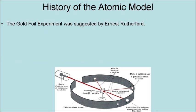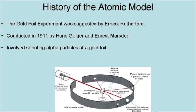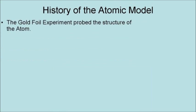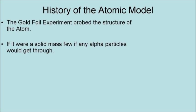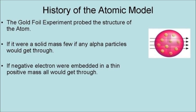The Rutherford Gold Foil experiment was first suggested by Ernest Rutherford and conducted in 1911 by Hans Geiger and Ernest Marsden. The experiment involved shooting alpha particles at a gold foil to observe how they were scattered by the gold on a screen. The Gold Foil experiment proved the structure of the atom, because if it were a solid mass, few if any alpha particles would get through. If, as they expected, the atom consisted of negative electrons that were embedded in a thin, positive mass, all of the alpha particles would get through.